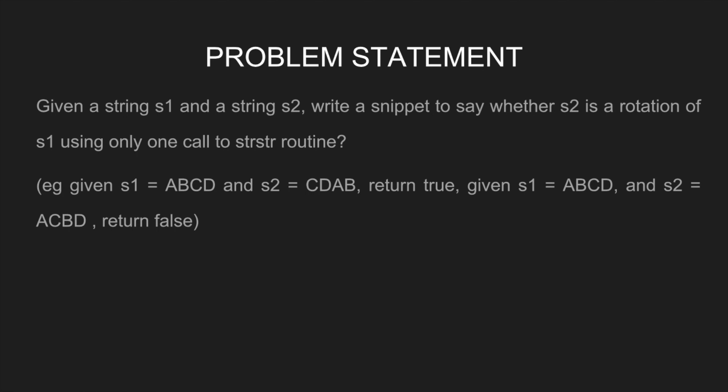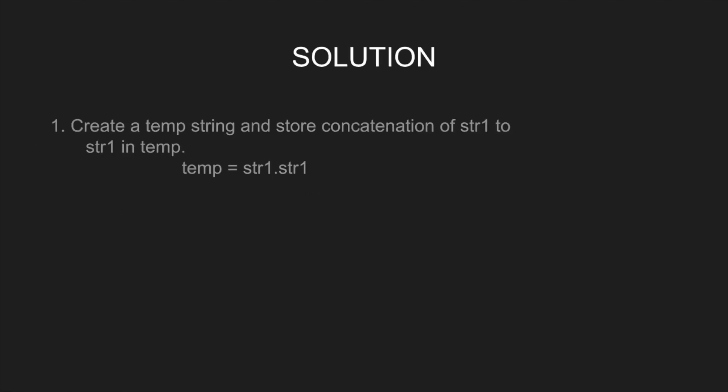We create a temporary string and store the concatenation of string1 to string1 in temp. temp equals string1 dot string1. Then if string2 is a substring of temp, then string1 and string2 are rotations of each other.